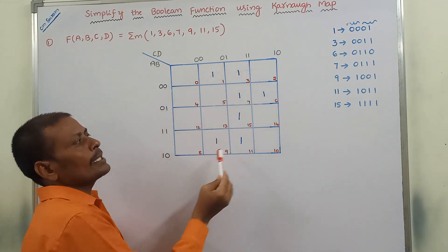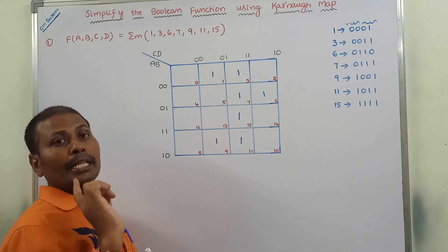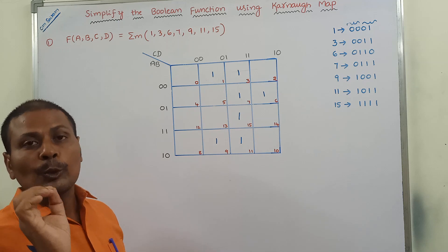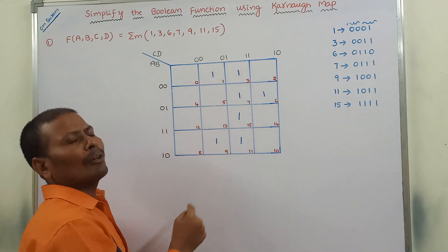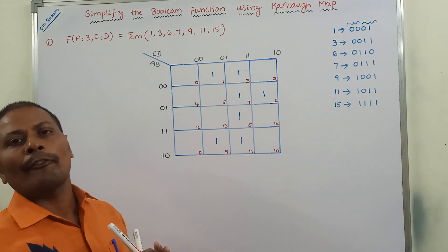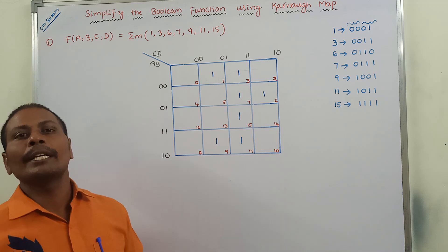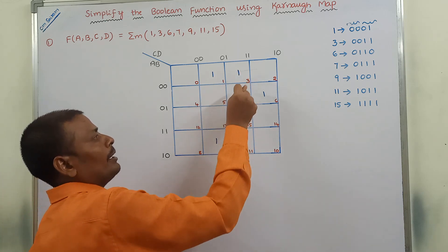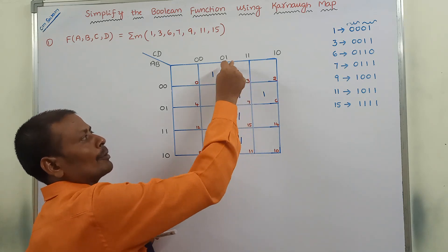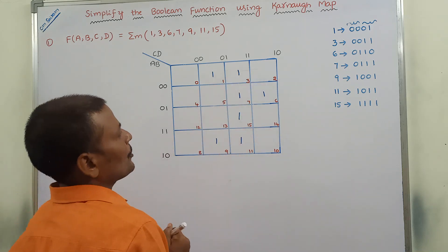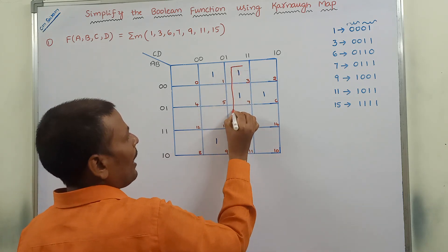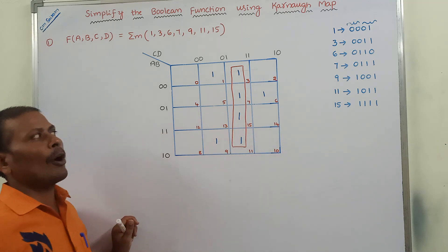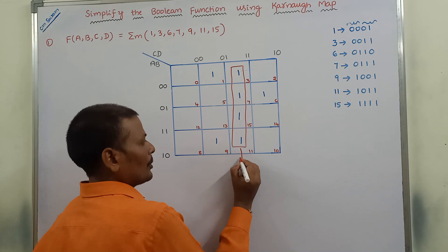How to group these 7 ones? First priority is given to octet — grouping of 8 adjacent ones. But here only 7 ones are there, so there is no possibility of getting an octet. Next, priority is given to quad — grouping of adjacent 4 ones. Here 4 ones are adjacent in this column, so these 4 ones can form one quad. This is the 1st quad.